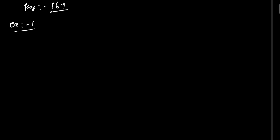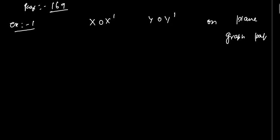So let us do some examples. The very first example — example 1, page number 169: draw the lines X-O-X dash and Y-O-Y dash as axes on the plane. You have to bring a graph paper — easily available at the stationary shop. Please go and buy a graph notebook, take a graph paper and plot the given points. Let us take A equal to (5, 3). Now we have to plot this on graph paper.